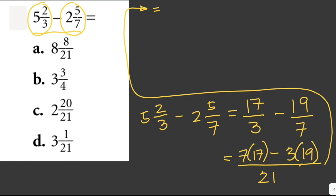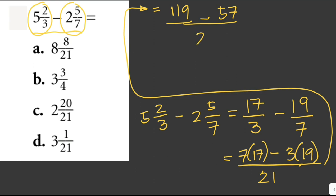Seven times 17 is 119 over 21, minus 3 times 19 is 57 over 21. Subtracting the numerators: 119 minus 57 equals 62 over 21. However, we don't have 62 over 21 among our choices.